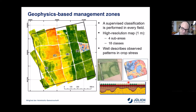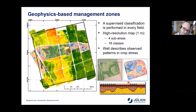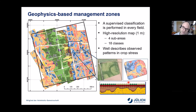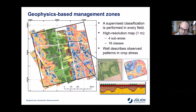The special thing in this study is that this classification was done for all fields — field by field, because of those confounding factors. In the end, we produced a supervised classification providing a high-resolution, one-meter-resolution map of the area, divided into four broad sub-areas A, B, C, and D, with a total of 18 soil classes.